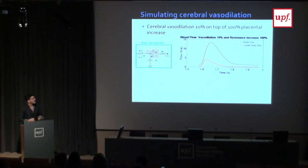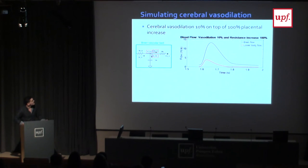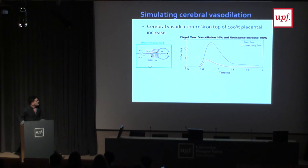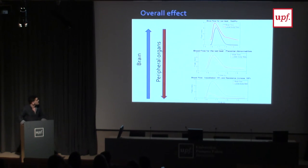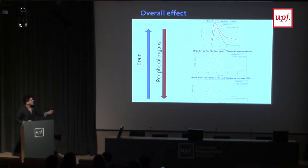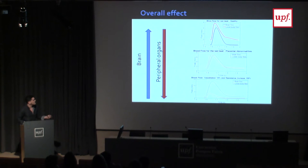We also simulated cerebral vasodilation, in which the radius of cerebral arteries and capillaries increased by 10% of their maximum value. As a result, brain flow increased quite a lot while lower body flow decreased. We then simulated various combinations of vasodilation and placental resistance increase, confirming that the more vasodilation and the more placental resistance increases, the more flow goes to the brain and the less goes to peripheral organs, with the vasodilation effect being greater than the placental resistance effect.